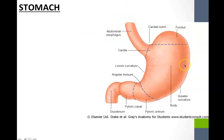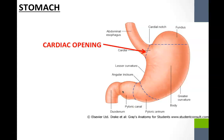Continuing the pathway of food from the esophagus, we now look at the stomach. Where the esophagus joins the stomach is called the cardiac opening, which contains the lower esophageal sphincter. Drawing a line from this opening to the lateral side of the stomach creates a dome shape on top, and any dome portion on an organ is called the fundus.